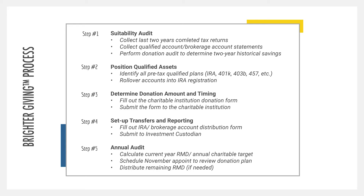Going on to step two: position your qualified assets. If you recall from our conversation about a qualified charitable distribution, that type of tax strategy can only happen from an IRA. So as you go through and identify all of your tax-deferred or pre-tax plans — whether that's an IRA, 401k, 403b, or 457 — title those and know what they are, and you'll know whether those qualify.